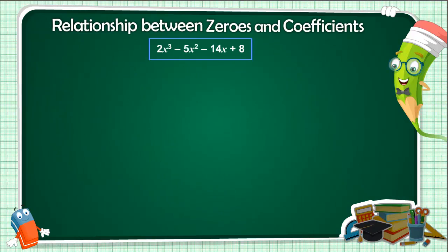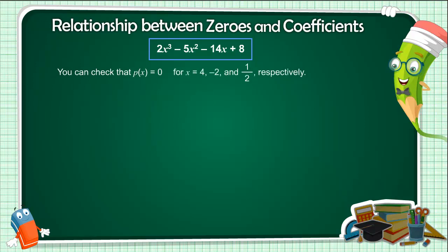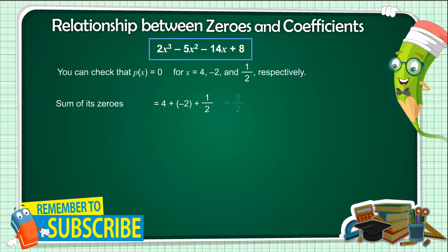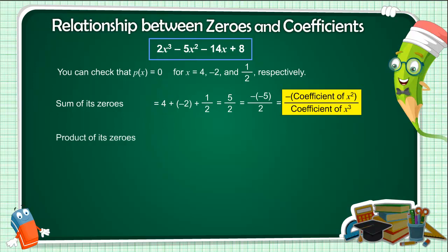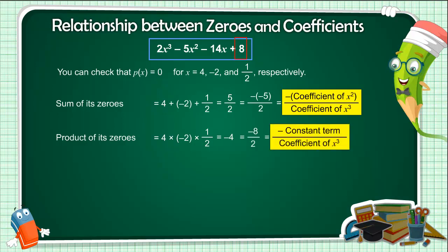Let us look at the cubic polynomial 2x³ minus 5x² minus 14x plus 8. You can check that p(x) equals 0 at x equals 4, minus 2, and 1/2. Sum of its zeros equals 4 plus (minus 2) plus 1/2, which equals 5/2, which we can write as minus(minus 5) by 2 — that is, minus the coefficient of x² upon the coefficient of x³. Product of its zeros equals 4 into (minus 2) into 1/2, which equals minus 4, which we can write as minus 8 by 2 — that is, minus the constant term upon the coefficient of x³.